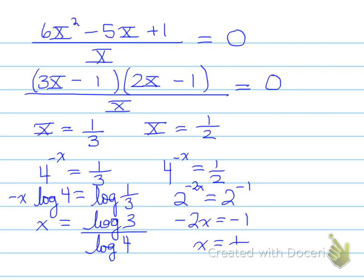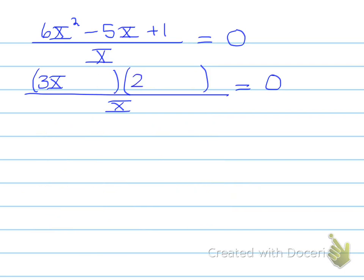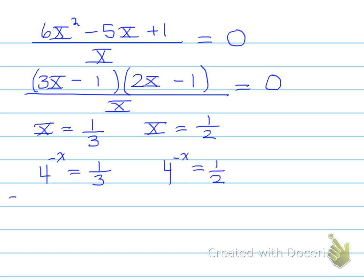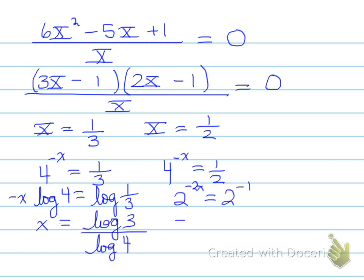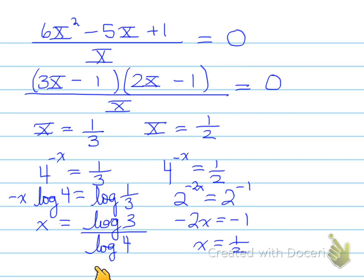We factor the numerator and solve for u. We then replace u with 4^(−x) and solve for x. Both answers are valid this time because both values are positive. For each, we take the log of both sides and use the power law, or find a common base of 2. One solution gives x equals one-half exactly; the other gives an approximate decimal answer.